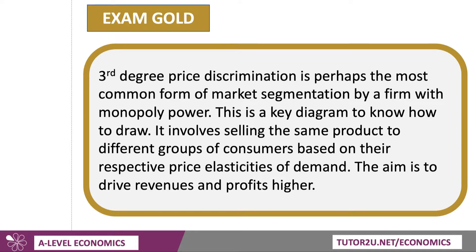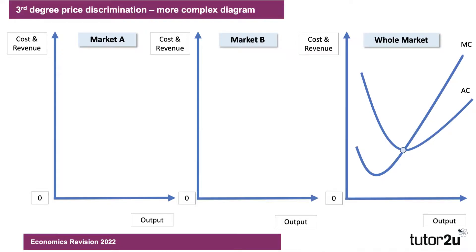So here we go. This is a diagram where you can either draw a complex diagram or a slightly more straightforward, simple diagram. I'll go through both with you. So here's the more complex diagram, which involves three diagrams side by side. You have the whole market on the right — the so-called non-segmented market — and then you break it down into two sub-markets, market A and market B.